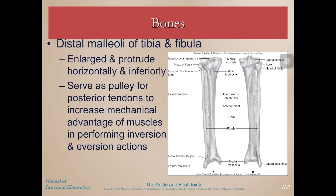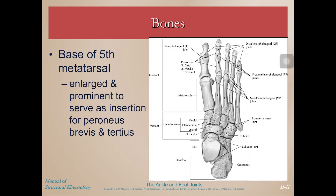Some more bony landmarks: we have the distal malleoli of the tibia and fibula, enlarged and protruding horizontally and inferiorly. These serve as a pulley for posterior tendons, increasing mechanical advantage when performing inversion or eversion muscle actions — similar to the patella in that they lengthen the moment arm. The base of the fifth metatarsal is also an important landmark, enlarged and prominent as the insertion for peroneus brevis and tertius. It's common to fracture this area — called a base fracture or Jones fracture — which can be hard to heal due to the tension from peroneus brevis and tertius.